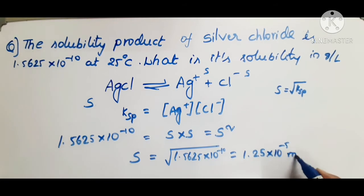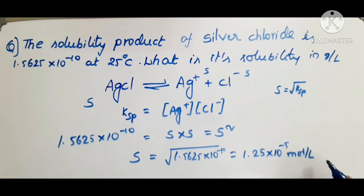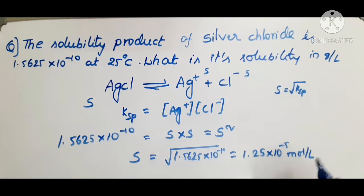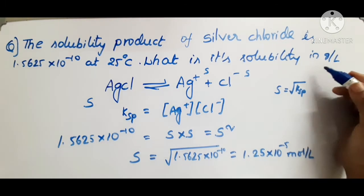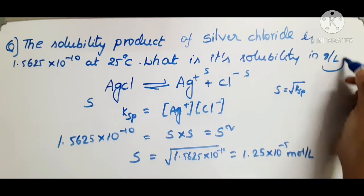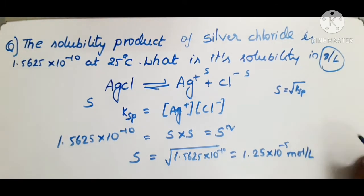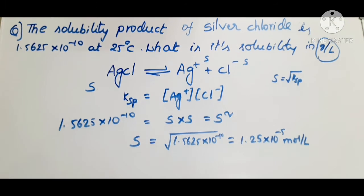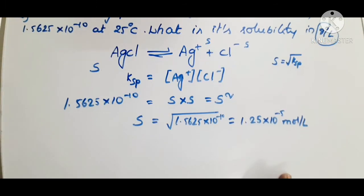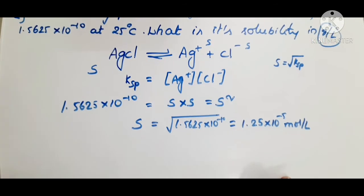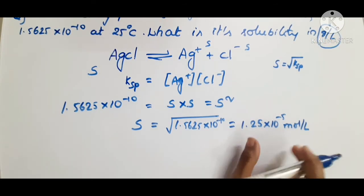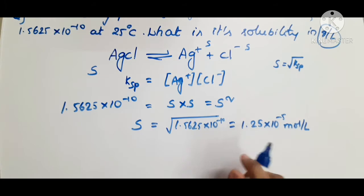So S = √(1.5625 × 10⁻¹⁰) = 1.25 × 10⁻⁵. The units here are moles per liter, because solubility is expressed in moles per liter. But in the question, solubility is asked in grams per liter — so we need to convert.